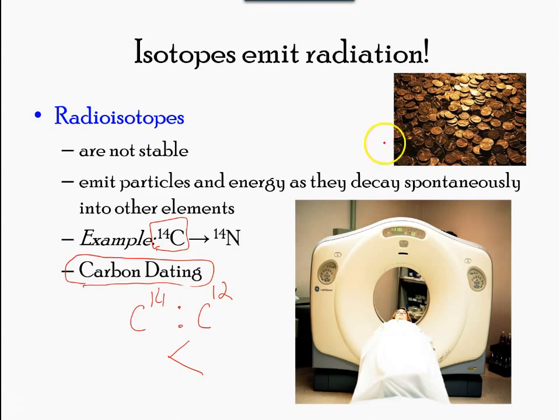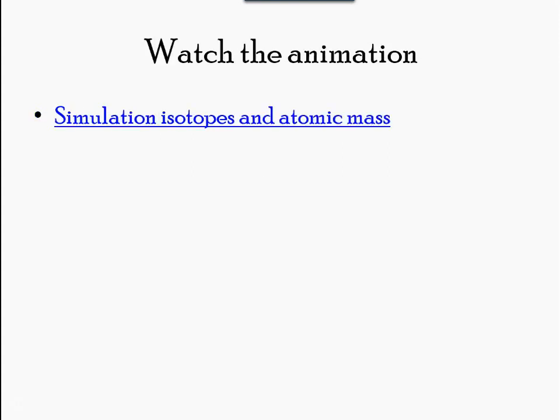Some isotopes are unstable and will lose protons, other subatomic particles, or energy to form more stable elements. These are called radioactive isotopes or radioisotopes. They are used as tracer molecules with detectable substance attached. We see them used in PET scans. It is undergoing a PET scan after having been injected with a positron-emitting isotope. You can also watch this animation in your course layout.